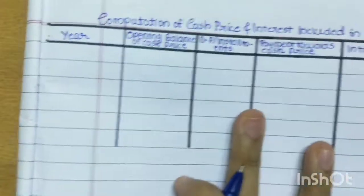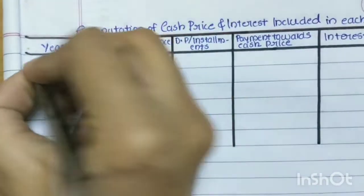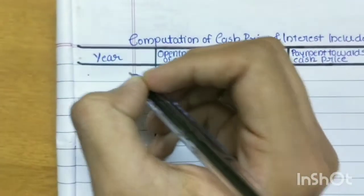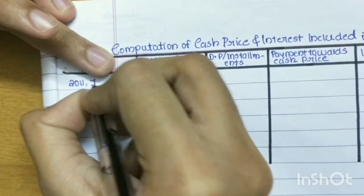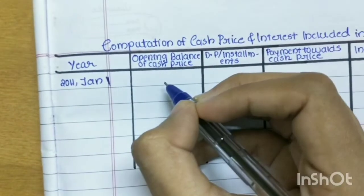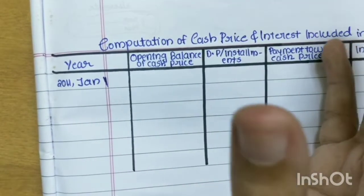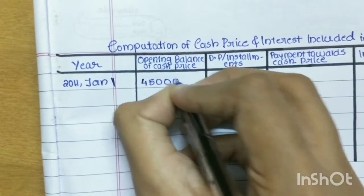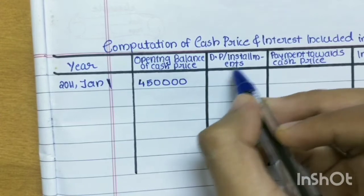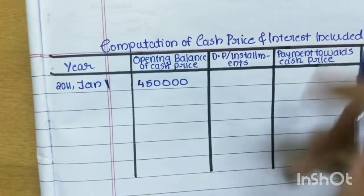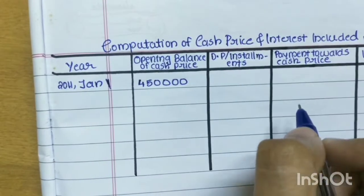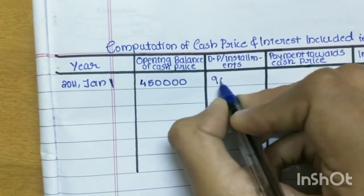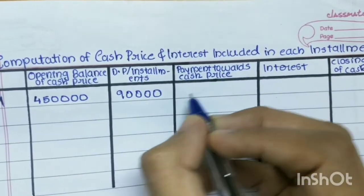Let's start with this. We are working on January 1st, 2011. The cash price is $4,50,000. I am going to pay down payment and installments from this money. Down payment is $19,000, cash price amount is set up, and we now work on the opening balance table.